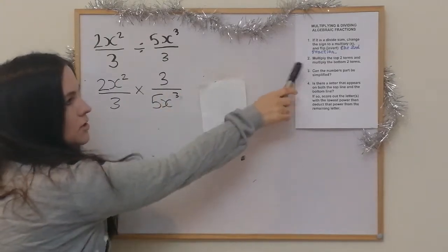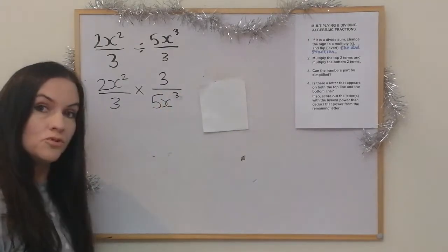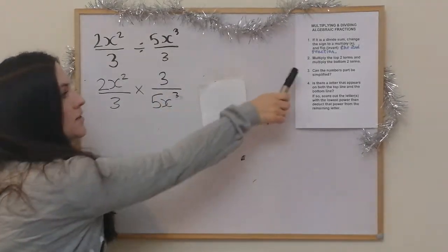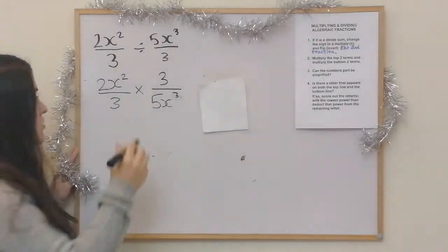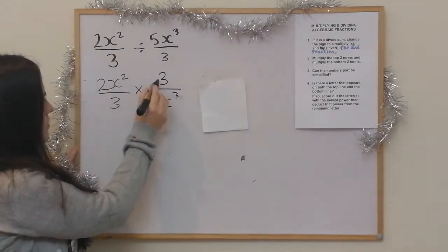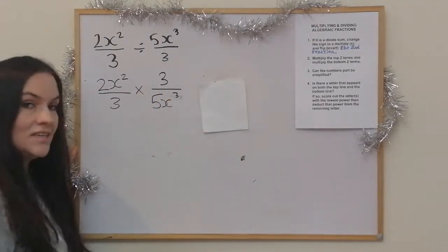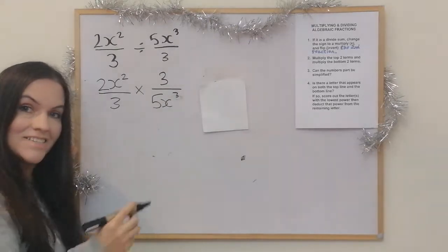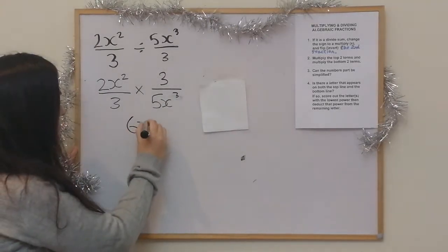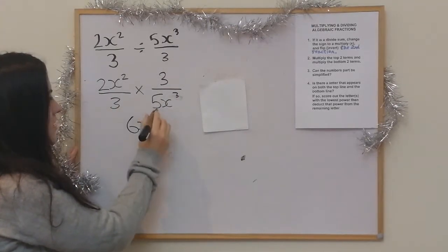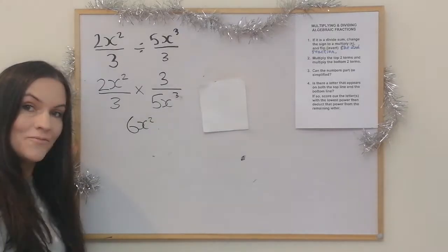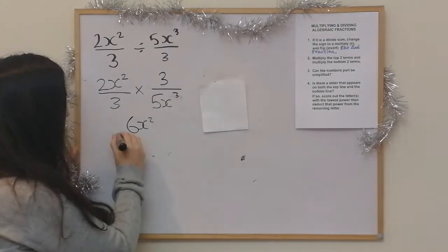Then it says multiply the top two terms and multiply the bottom two terms. So the top two terms: if I do 2x squared times 3, I get 6x squared. And then if I do 3 times 5x cubed, I get 15x cubed.